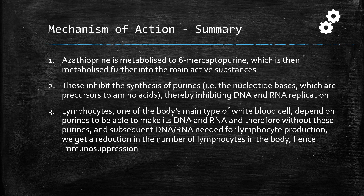Once you take a tablet of azathioprine or 6-mercaptopurine and it gets to its main active substances, it inhibits the synthesis of the purines - adenine and guanine - thereby inhibiting DNA and RNA replication, which is necessary for lymphocyte production. Without these purines and subsequent DNA and RNA needed for lymphocyte production, we get a reduction in the number of lymphocytes overall in the body, and hence a lower immune system and immunosuppression, which benefits all the conditions we've mentioned.